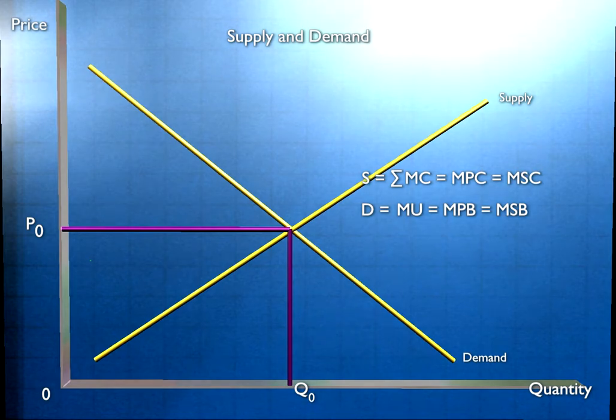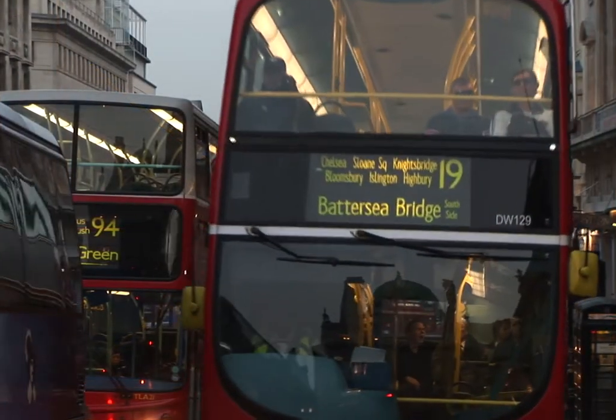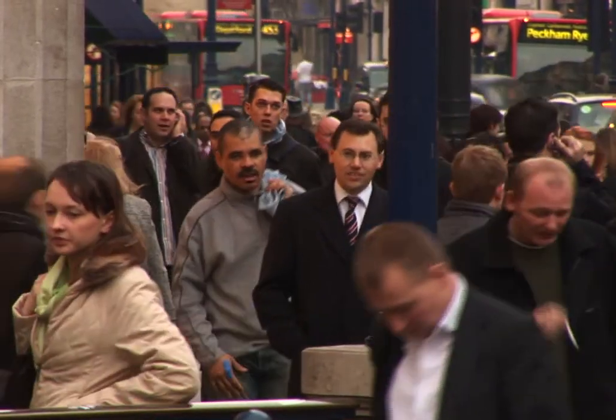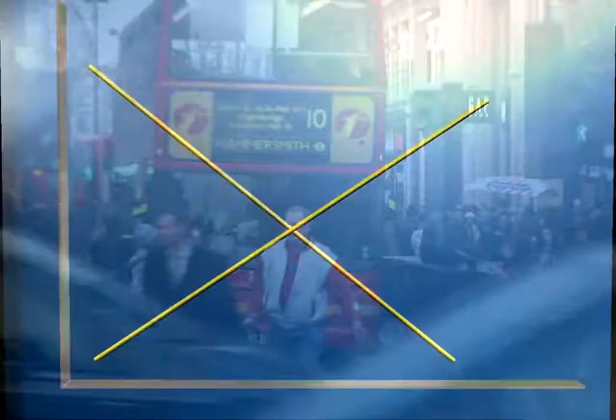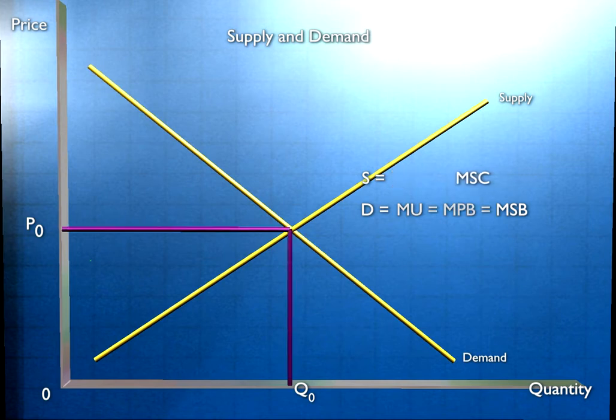But what we want as a society is to produce all the output where the benefit to society is at least as great as the opportunity cost to society. What then would be the optimum level of output? Well, marginal social benefit equals marginal social cost at Q-naught with a price at P-naught. So what is best for society is what is best for individuals.